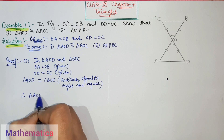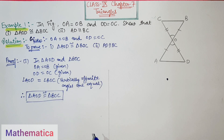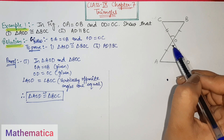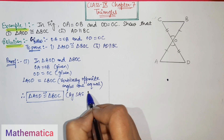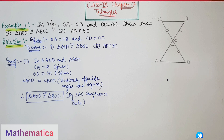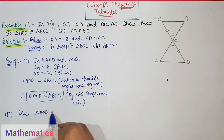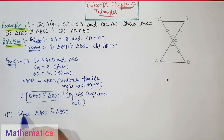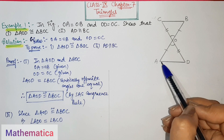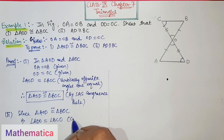Therefore, triangle AOD is congruent to triangle BOC by the SAS rule — the side, included angle, and side. Since triangle AOD is congruent to triangle BOC, this implies angle ADO equals angle BCO — that is, this angle equals this angle — by CPCT.